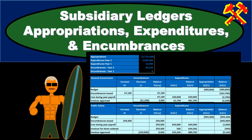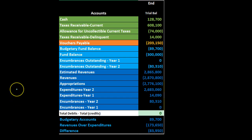In this presentation we will take a look at subsidiary ledgers related to appropriations, expenditures, and encumbrances. This is going to be the trial balance that we will be using. We are considering the items below what would be the equity section in a for-profit organization — the general fund type activities and the items down here.